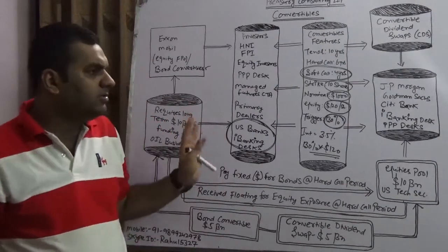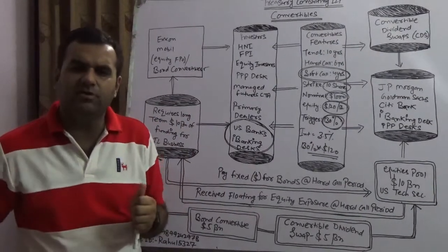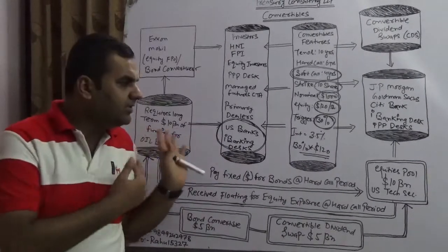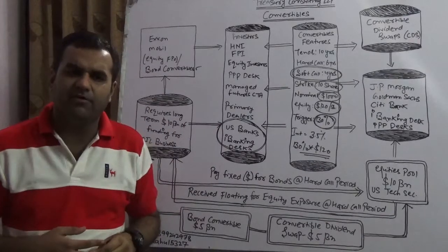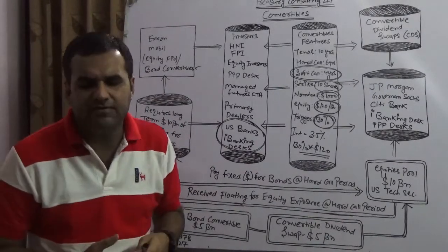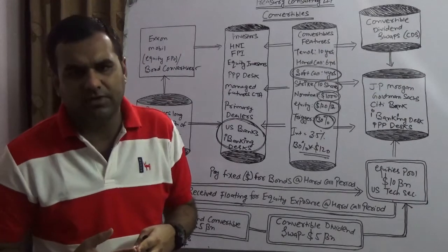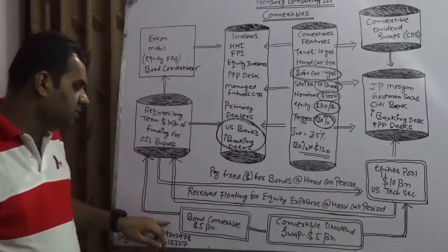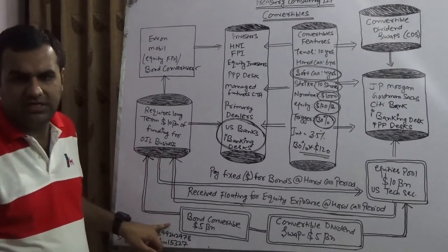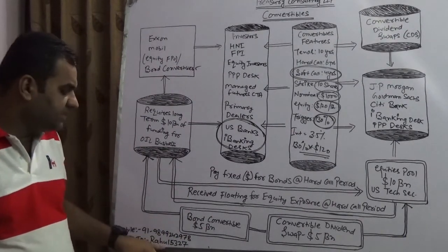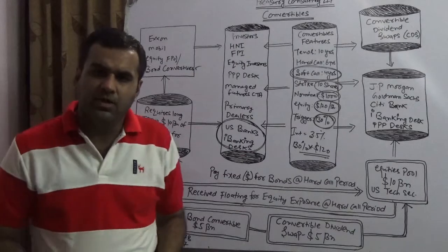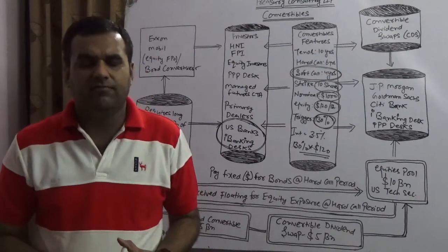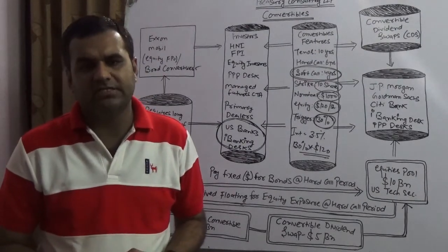In this video we have talked about convertible dividend swaps. In the next video we would be talking about Quanto convertible swaps, going directly to the Quanto structure. In case you have any doubt, my mobile number is 98-99-242-978. My Skype ID is Rahul5327. My email is rahul.magan@treasuryconsulting.in and my website is www.treasuryconsulting.in.